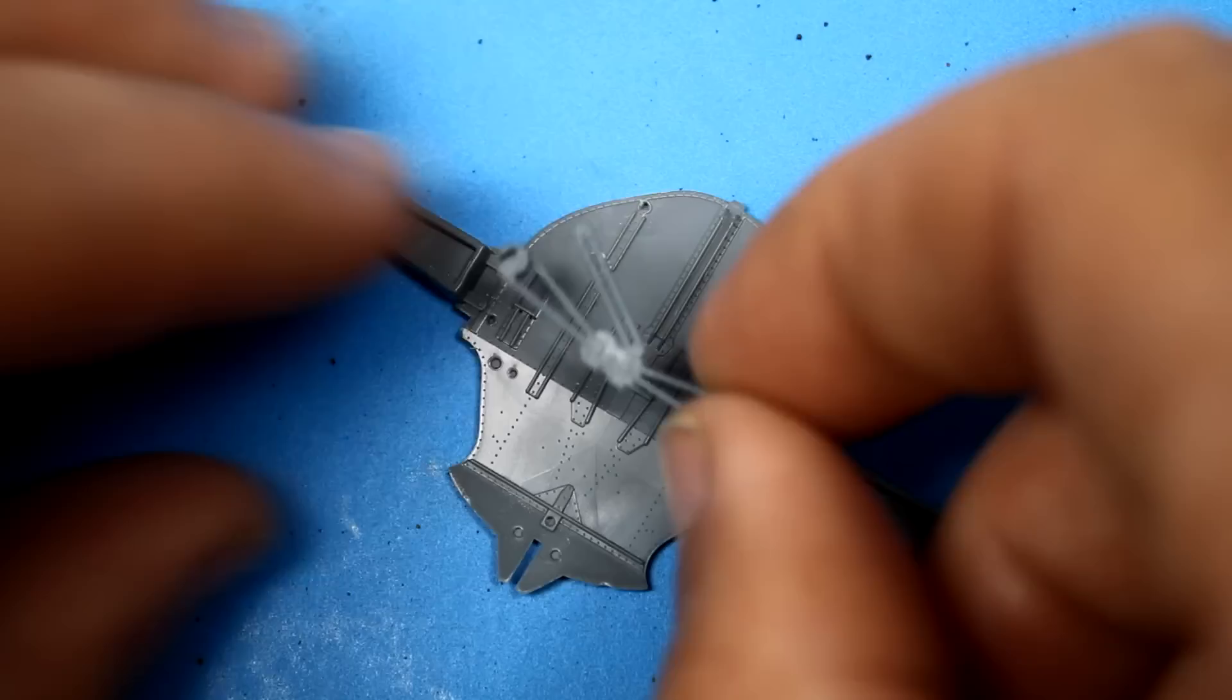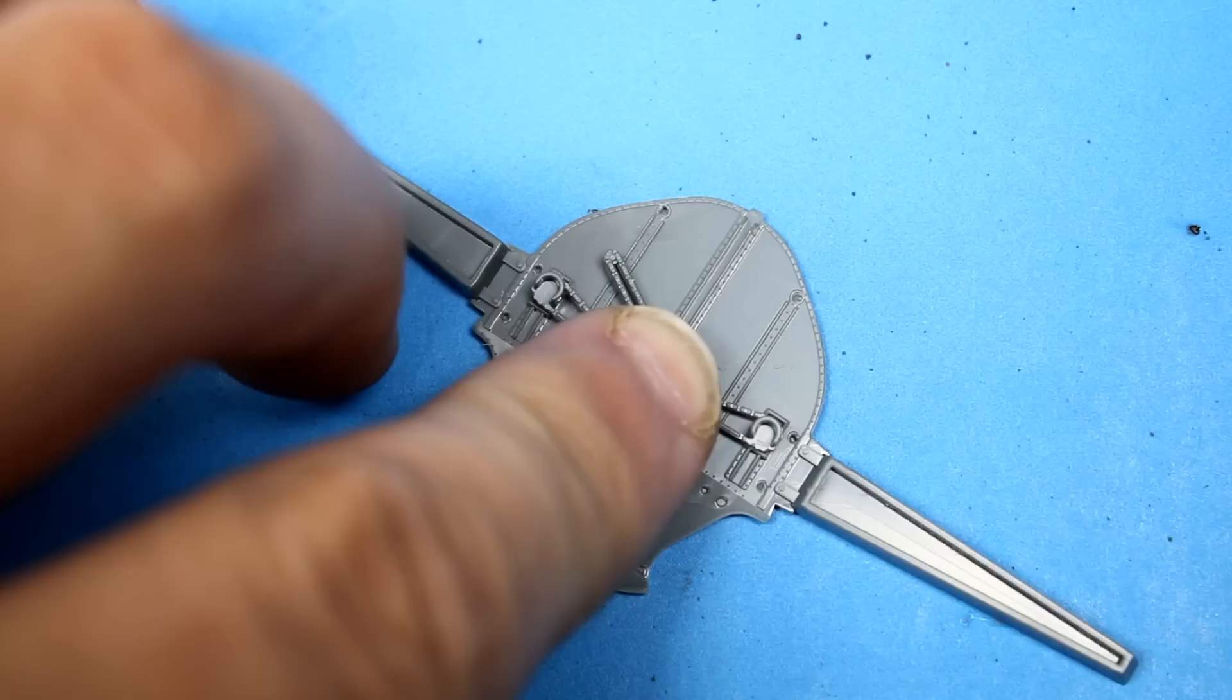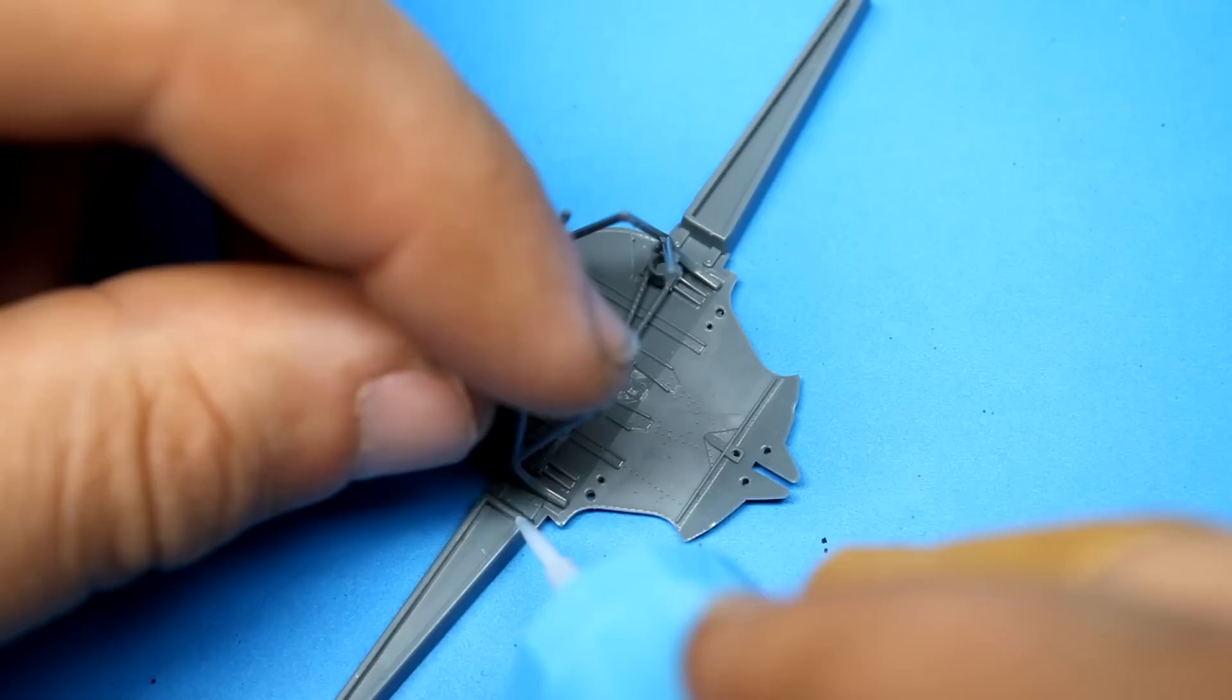One thing I personally enjoy about the Wildcat is the way the landing gear is set up in the front of the aircraft. You can see everything that's going on up in there and that's going to lead to some scratch detailing later. That does turn out to be a double-edged sword though because that means the modeling company has to capture as much of that detail as they can and still make it easy for the modeler to assemble.